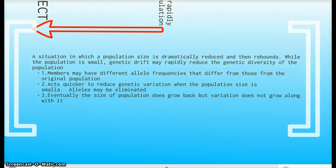Here are three points I want you to keep in mind. Members may have different allele frequencies that differ from those of the original population. Pretty much it could have a higher allele frequency for the dominant gene or the recessive gene. It acts quicker to reduce genetic variation when the population size is smaller.